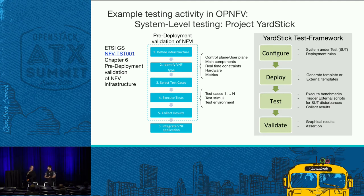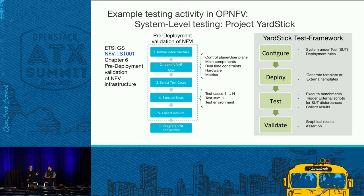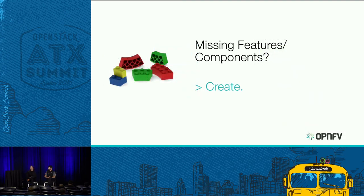If you go to testresults.opnfv.org, all the results are put into an InfluxDB and you get Grafana visualization. You have a history of what worked, on which lab, how it worked out. If you want to run your own stuff privately — maybe you have something you want to test and keep proprietary but still compare it to what happened in the open — you can absolutely do that now. We're building an inventory of things that worked and how well they performed, so you can understand where you are in the bigger scheme of things.